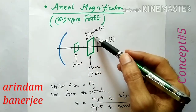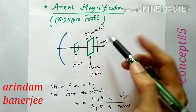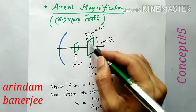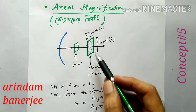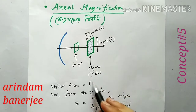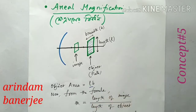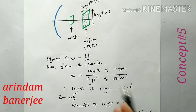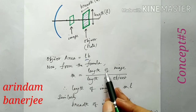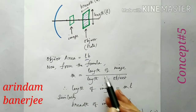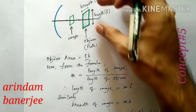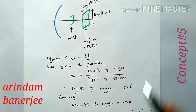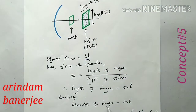The object has a length L and breadth B. So the area of the object is L into B. Now, from the formula m equals length of image divided by length of object, the length of the image is m into L. Similarly, the breadth of the image will be m into B.